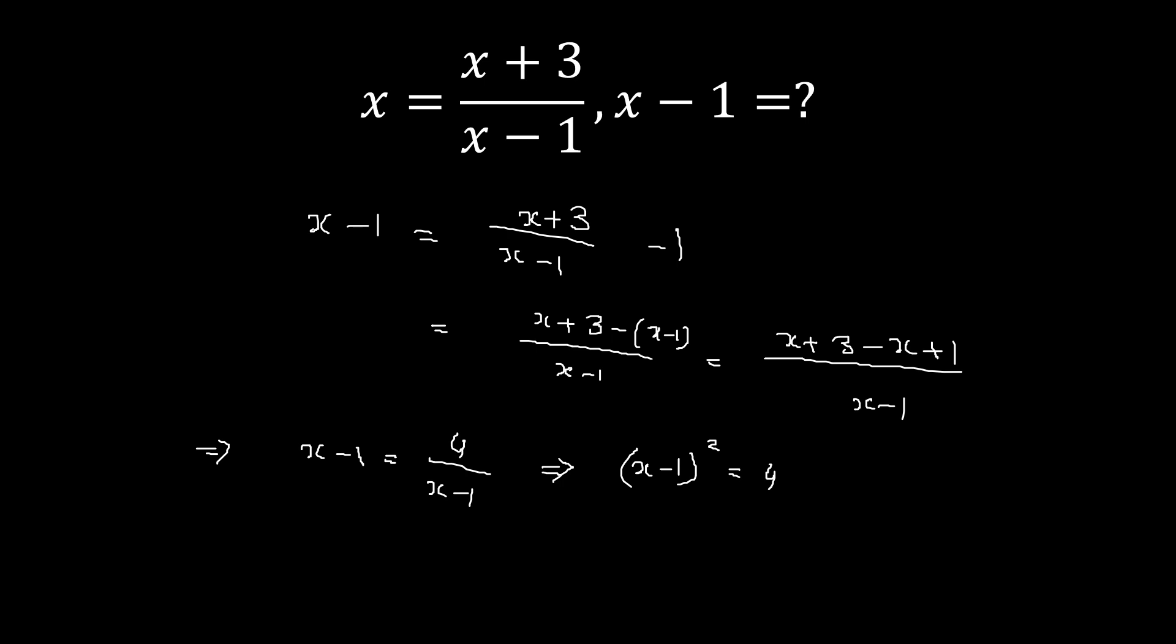For what values of x minus 1 will the square be 4? Any guesses? The values that will satisfy this equation will be plus 2 and minus 2. Both will satisfy because if you take the square of 2 you get 4, and if you take the square of minus 2 you also get 4.